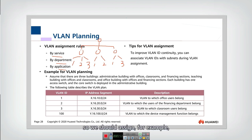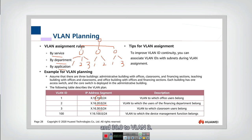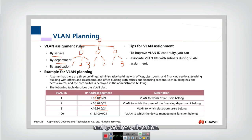Now we should assign different subnets to different VLANs. For example, 10.0.x.x is assigned to VLAN 1, 20.0.x.x to VLAN 2, and 30.0.x.x to VLAN 3. That covers VLAN assignment and IP address allocation.